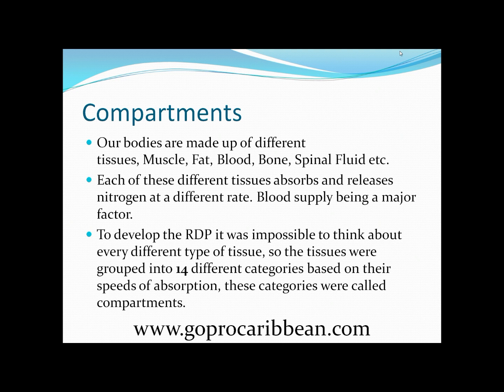To develop the RDP, it was impossible to think about every different type of tissue. So the tissues were grouped into 14 different categories based on their speeds of absorption. These categories are what we mean by compartments — a compartment basically represents a grouping of tissues in the human body that absorb and release nitrogen at a similar speed. The RDP was designed for recreational diving, diving that involved not exceeding the no-decompression limit. Given that premise, 14 different compartments were used in the decompression model to keep divers safe and avoid DCS.